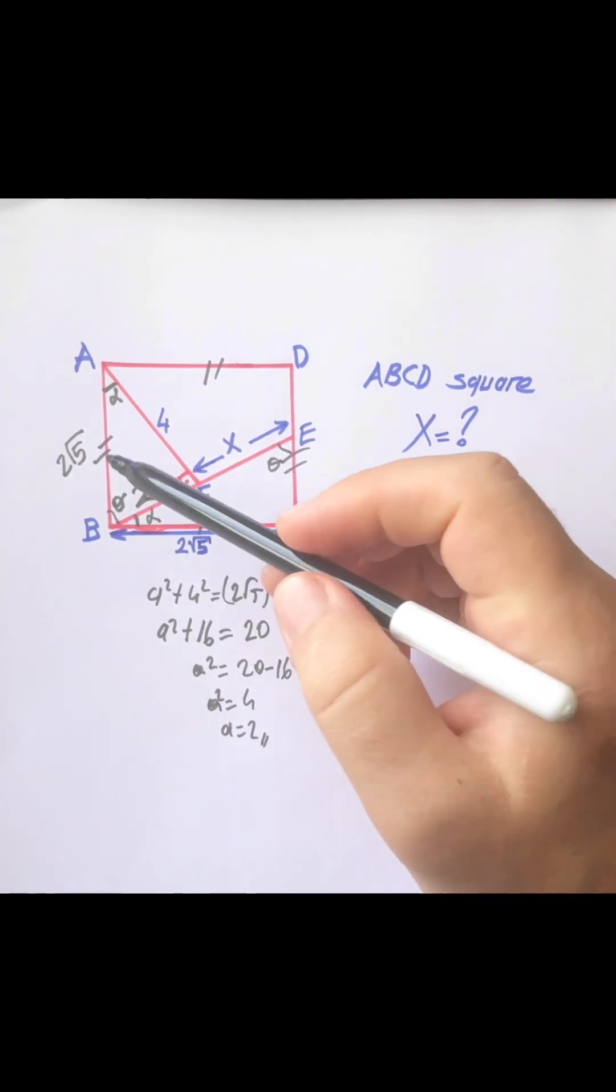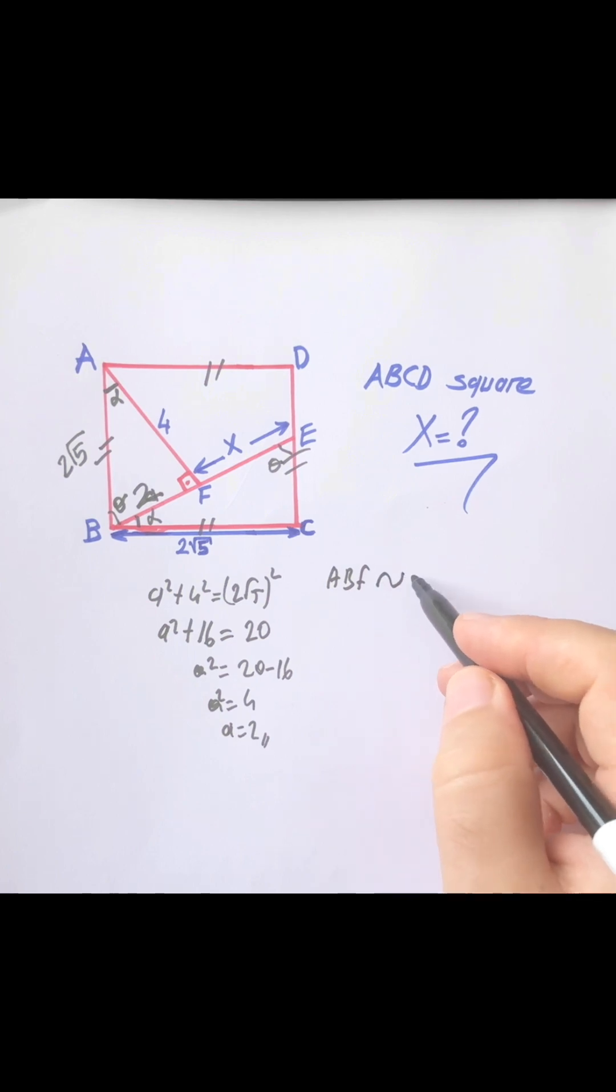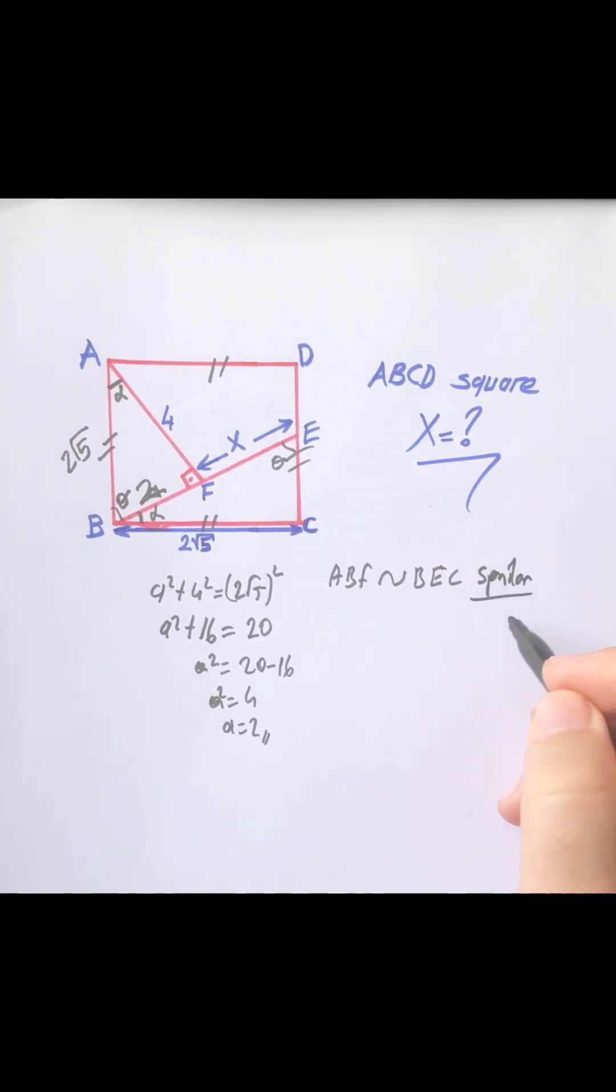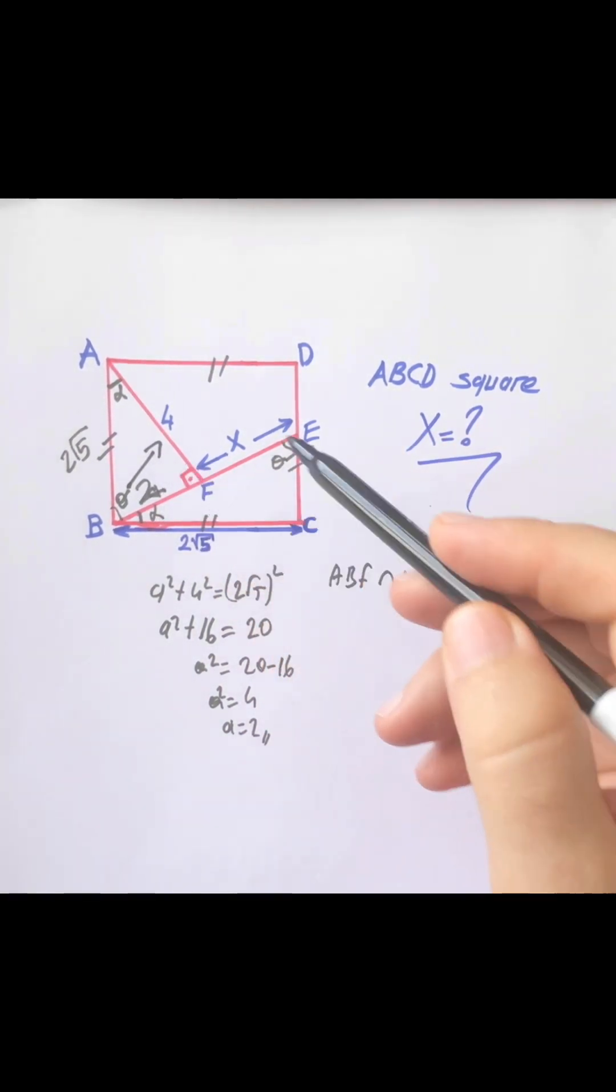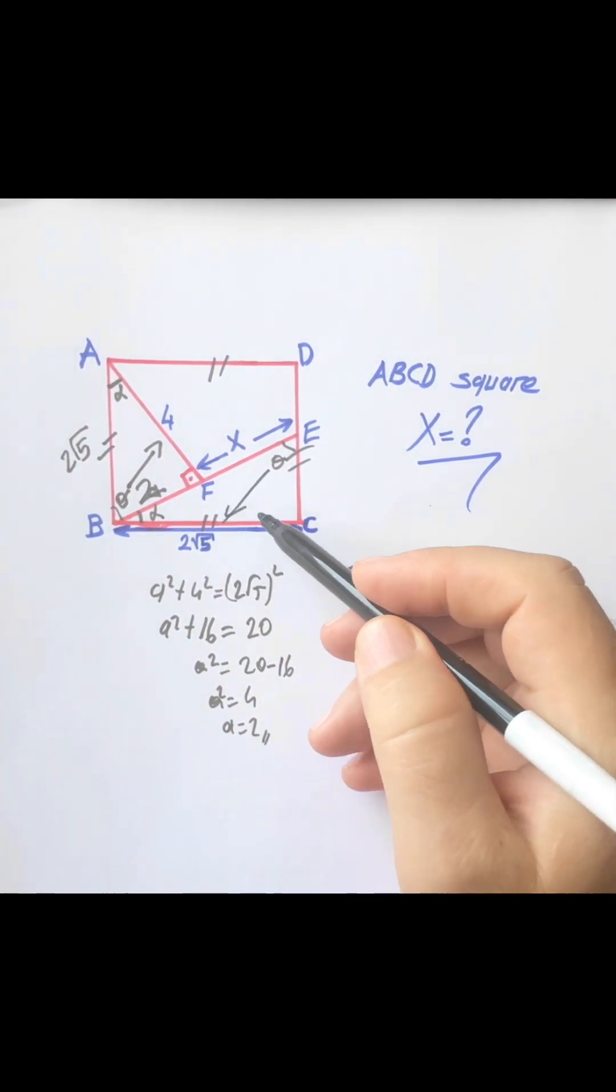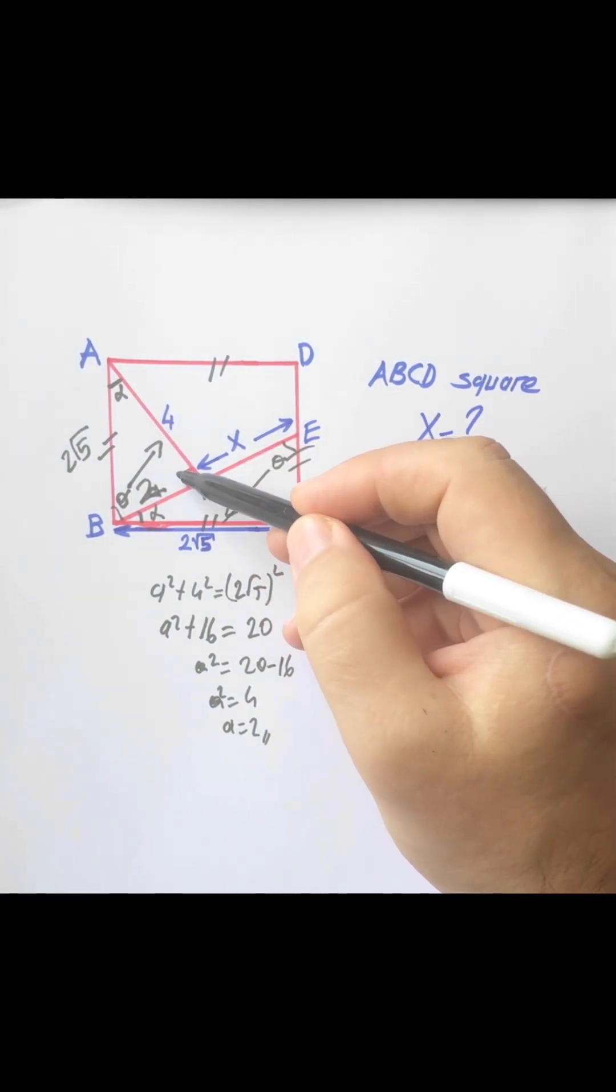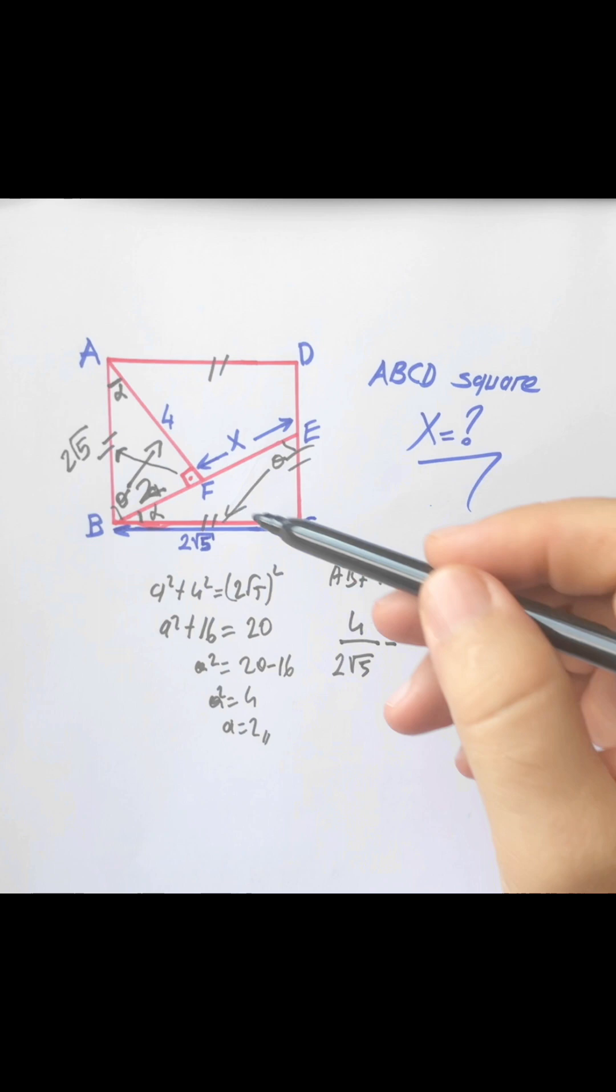Since the triangles are similar, we can set up a proportion using the opposite sides of theta: 4 over 2√5 equals the opposite of the 90-degree angle, which is 2√5, over the opposite of 90 degrees in the other triangle, which is 2 + X units.